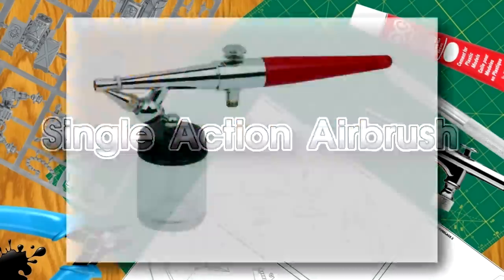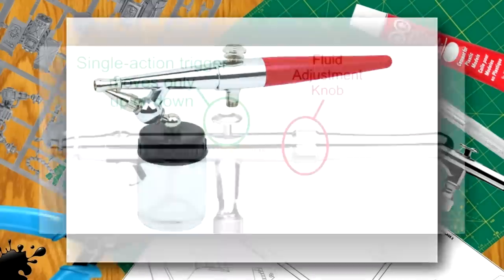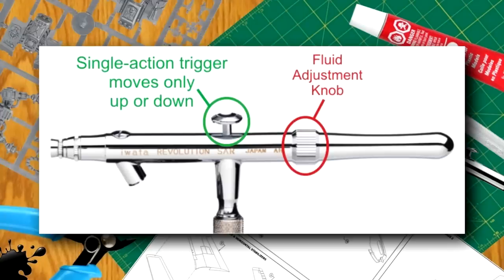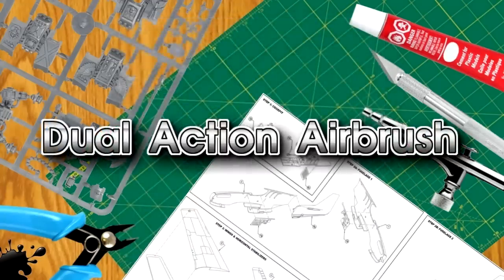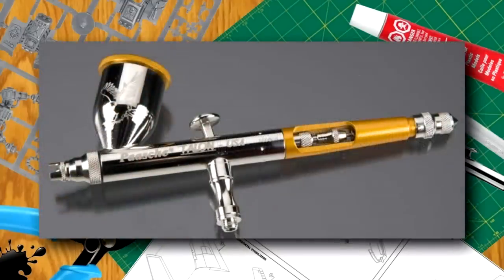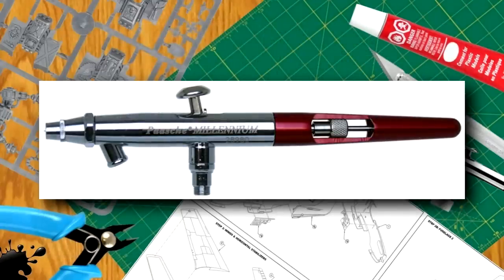Single action refers to airbrushes on which the trigger controls only the air flow. The amount of paint flow is generally controlled with an adjustment of the needle position, usually with a small screw or nut towards the back of the brush, or with an external mix airbrush by turning the fluid cap on the paint tip at the front of the airbrush. Dual action means an airbrush in which the trigger controls both air and paint flow, generally pushing down the air flow control and pulling back to increase the paint flow. This simple maneuver allows the artist to change the width of the line and the amount of paint without stopping.